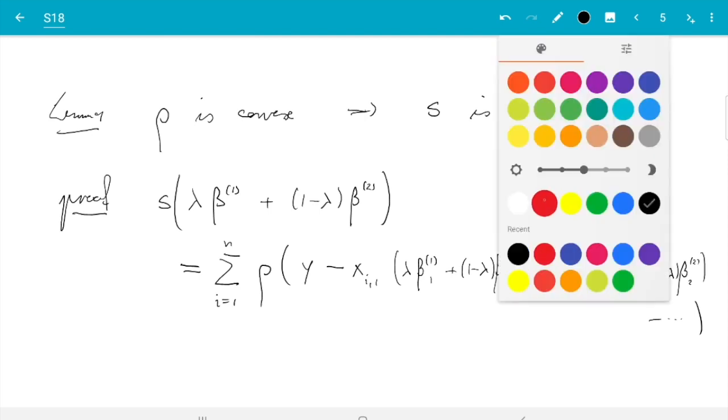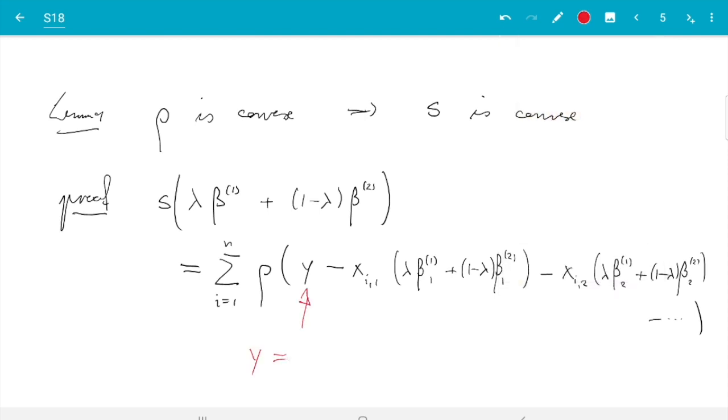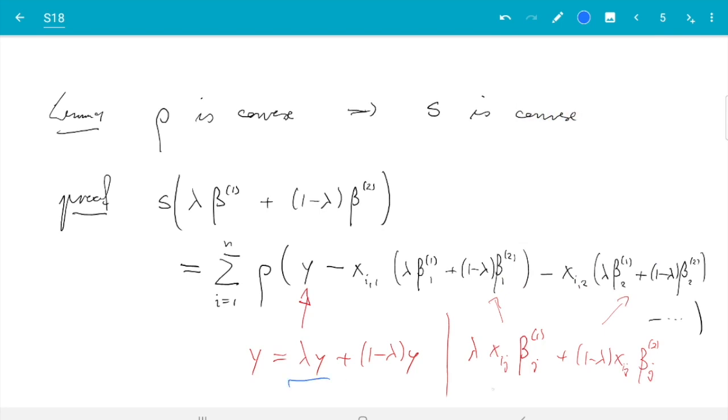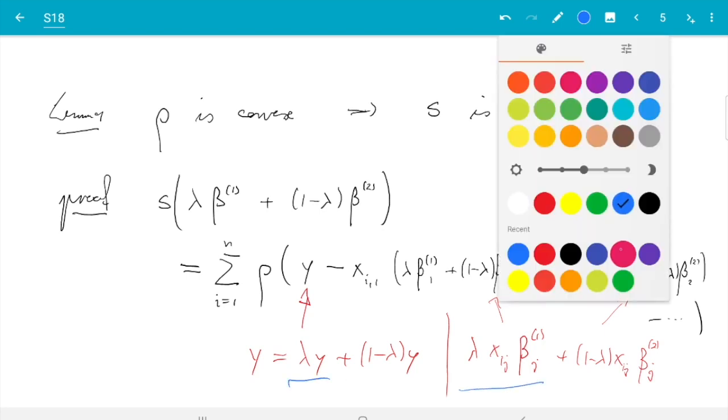Now, what we do is relatively simple. Namely, we can write Y as lambda Y plus 1 minus lambda Y. That drive forward. The lambda Y cancels. And then this here we can write as X i J. Lambda can go here. Beta 1 J plus 1 minus lambda X i J beta 2 J. And then what I'm going to do is I'm going to group all the first terms together and I'm going to group all the second terms together.